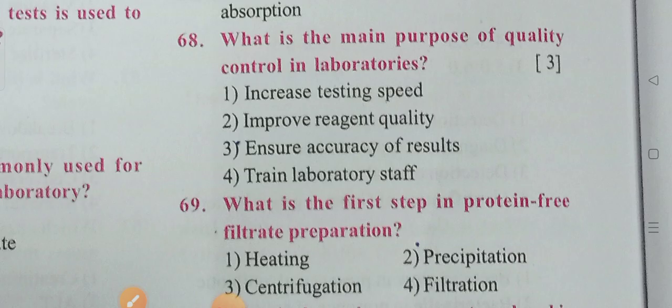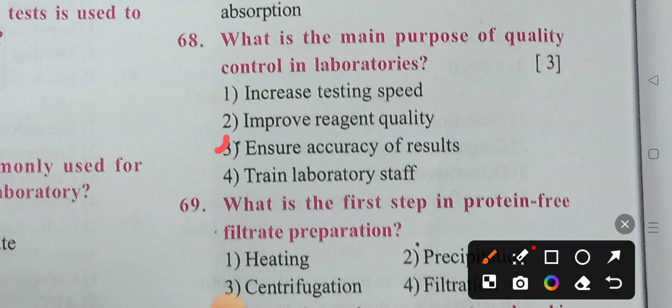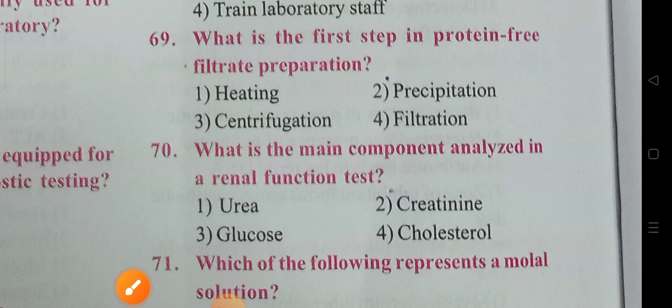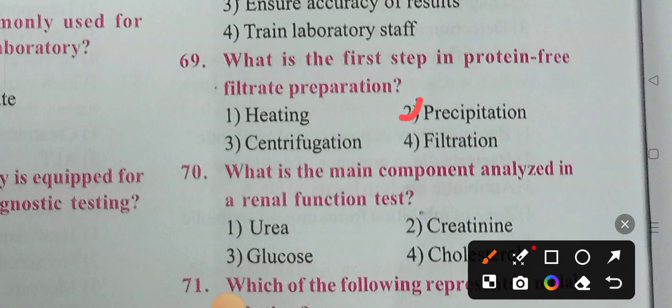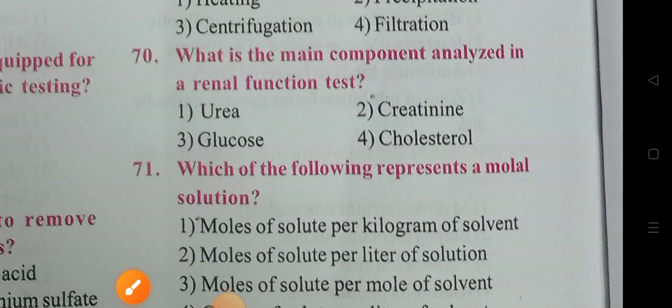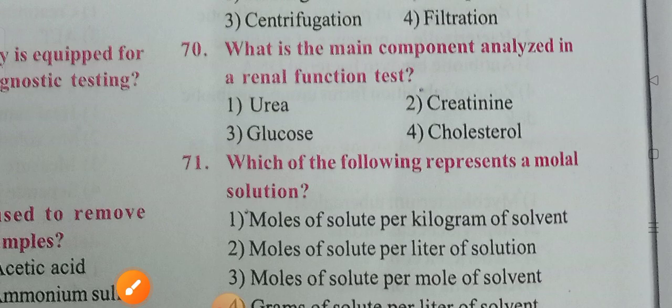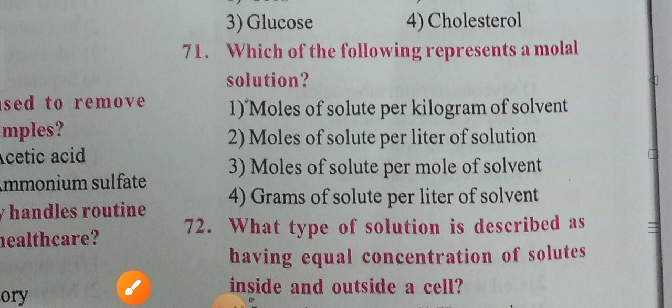Quality control options include increased testing speed, improved reagent quality, and ensure accuracy of results. Next: What is the first step in protein-free filtrate preparation? Options are heating, precipitation, centrifugation, and filtration. Option 2 is the correct answer — precipitation. Next: What is the main component analyzed in a renal function test? Options are urea, glucose, creatinine, and cholesterol. Option 2 is the correct answer — creatinine.